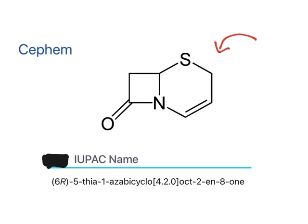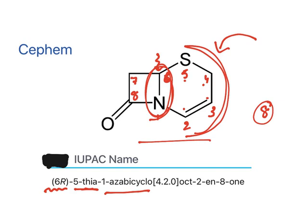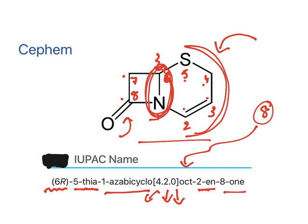Cephalosporins are derivatives of the cephem ring. The ring numbering starts from position one through eight, so totally eight atoms make up this ring. The sixth position has a stereocenter. At the fifth position, sulfur is present, so it is called a 5-thia ring. It is named as a bicyclo system: four atoms on one side, two atoms on the other side, and the bridge atom consists of zero atoms, giving 'bicyclo[4.2.0]' — eight atoms total, hence 'oct'. At the second position there is a double bond ('2-ene') and at the eighth position there is a ketone ('one').